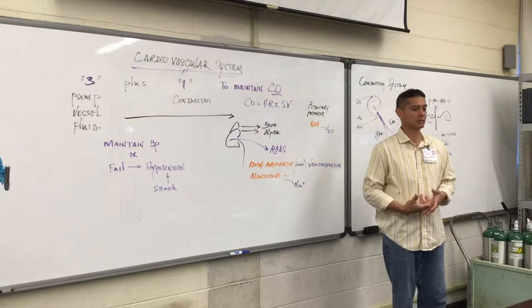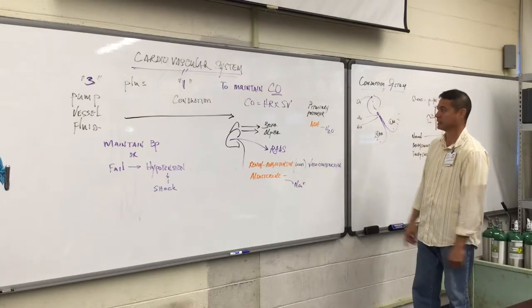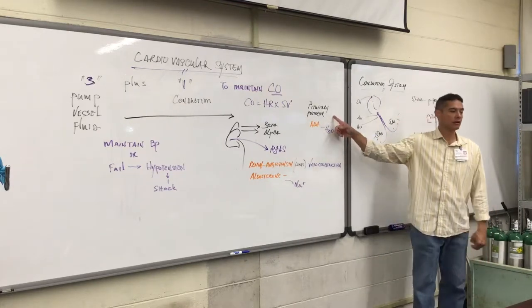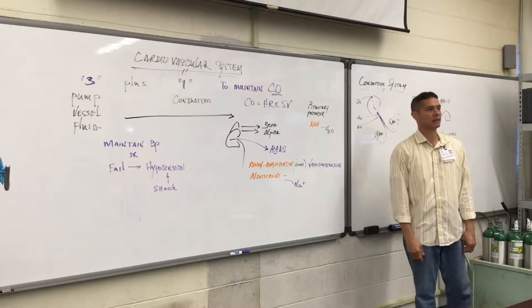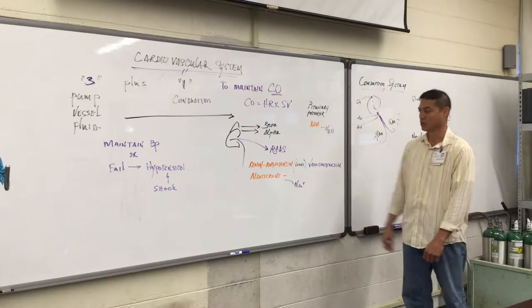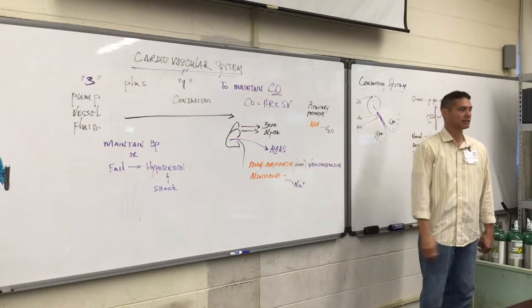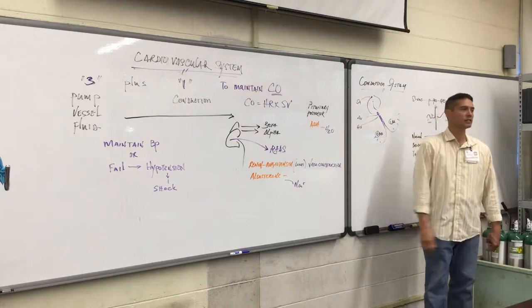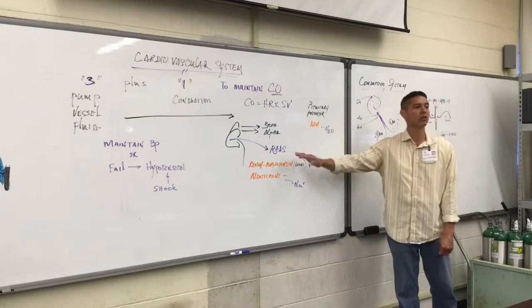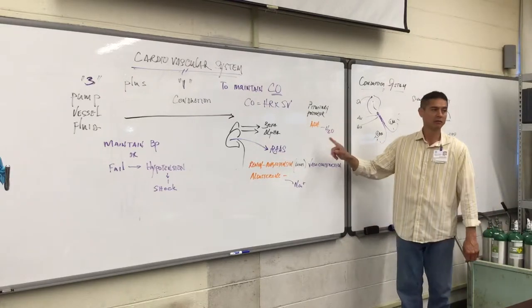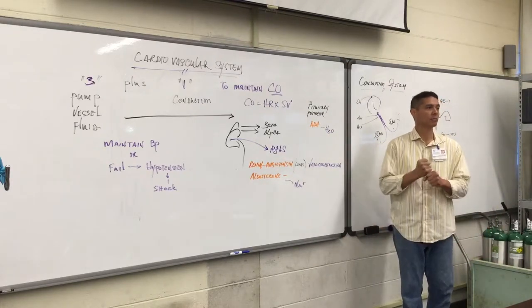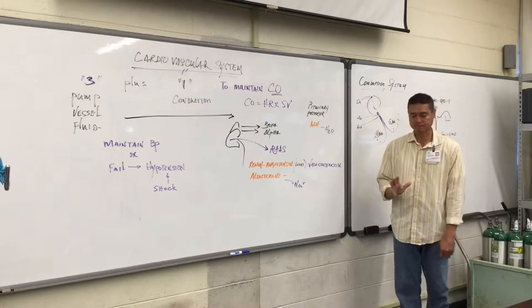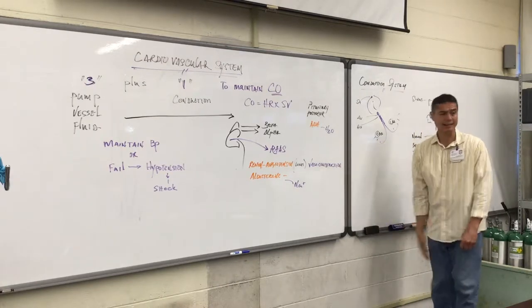At the posterior pituitary, we have secretion of what's called anti-diuretic hormone, ADH, or in some cases people call this vasopressin. This will stimulate thirst as well as the retention of water. So the kidneys no longer produce urine because it's being held back. It's being inhibited by anti-diuretic hormone.